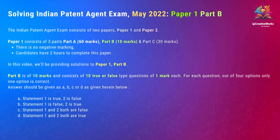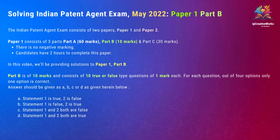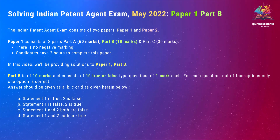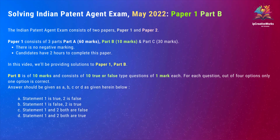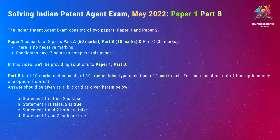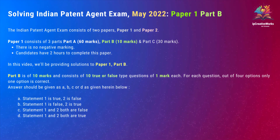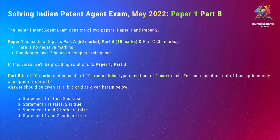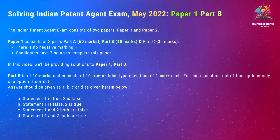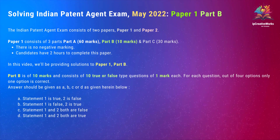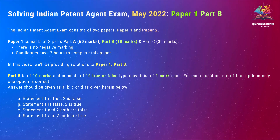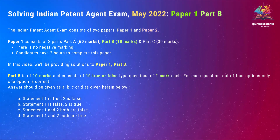Part B is of 10 marks and consists of 10 true or false type questions of one mark each. For each question, out of four options only one option is correct. The answer should be given as A, B, C, or D. A: Statement 1 is true, 2 is false. B: Statement 1 is false, 2 is true. C: Statement 1 and 2 both are false. D: Statement 1 and 2 both are true.